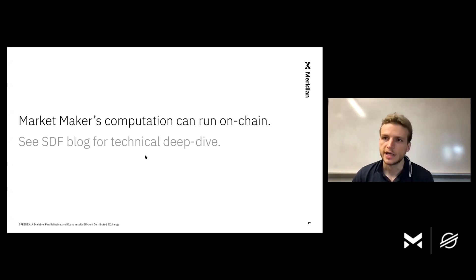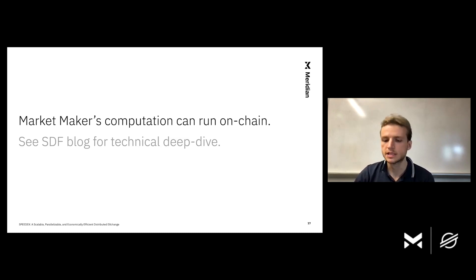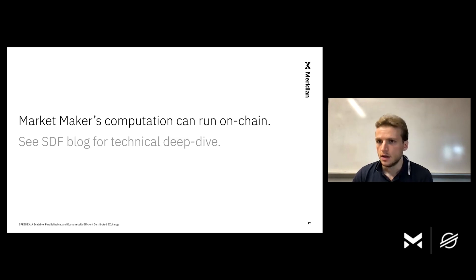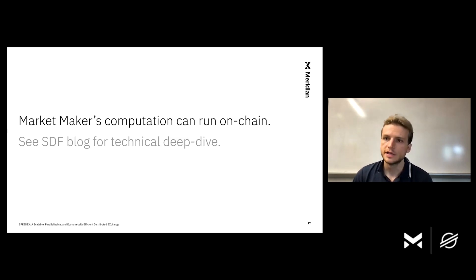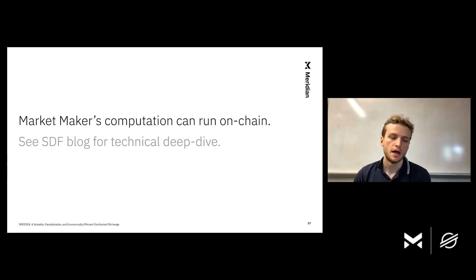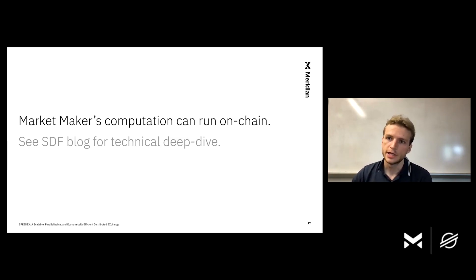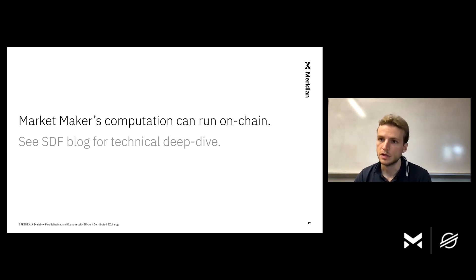The core technical challenge is how to run that computation efficiently and quickly. It turns out this computation can actually run entirely on-chain. For context, in a blockchain like Stellar where blocks are produced roughly every five seconds, we need an algorithm that runs reliably in under one second or under half a second. The algorithms start at some candidate set of prices and then iteratively refine these prices until they get very close to market clearing, and then we round out the approximation error with a small linear program. I'll leave the technical details for a blog post that will soon be up on the SDF blog.